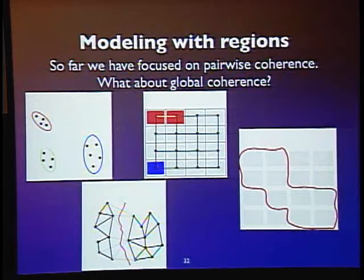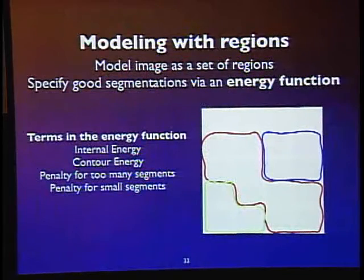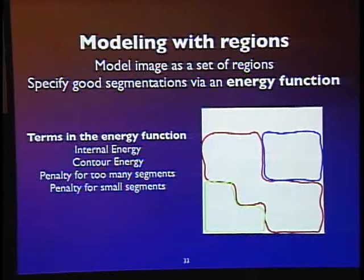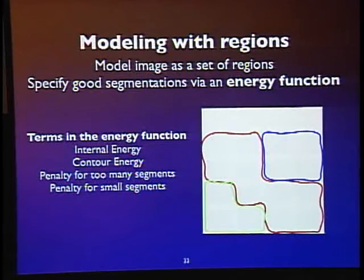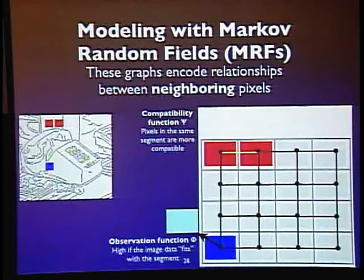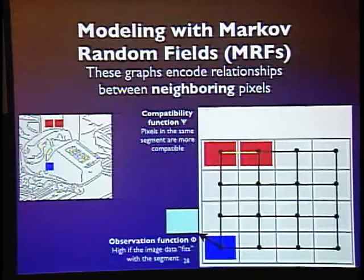The remaining approach — which you can review on your own — formalizes segmentation not in terms of pairwise pixel relationships but over entire regions, determining where global regions ought to be. Any last questions about bottom-up image segmentation? A student asks about the two Markov functions: the compatibility function, which operates between pairs of neighboring pixels, and the observation function, which relates labels to the imaging data.